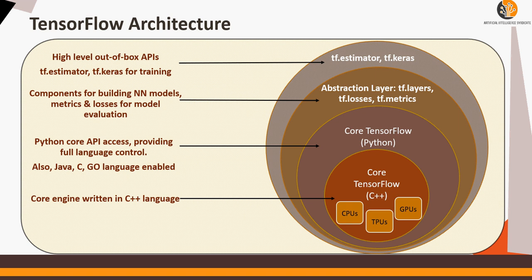And then TF Estimator and Keras are the high-level APIs which can help create neural networks and model training and evaluation super fast. So this is a very high level architecture of how TensorFlow itself is designed.